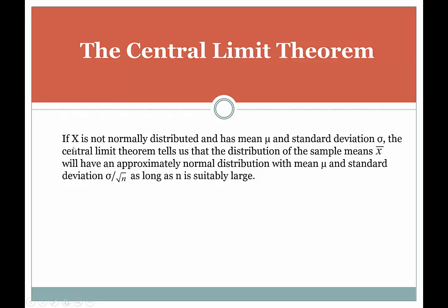Here's what the theorem says. If x is not normally distributed — in other words, it does not have a bell shape — but it has a mean mu and standard deviation sigma, the central limit theorem tells us that the distribution of the sample means, or x-bars, will have an approximately normal distribution, so approximately bell-shaped, with a mean of mu and standard deviation of sigma divided by the square root of n, as long as n is suitably large.